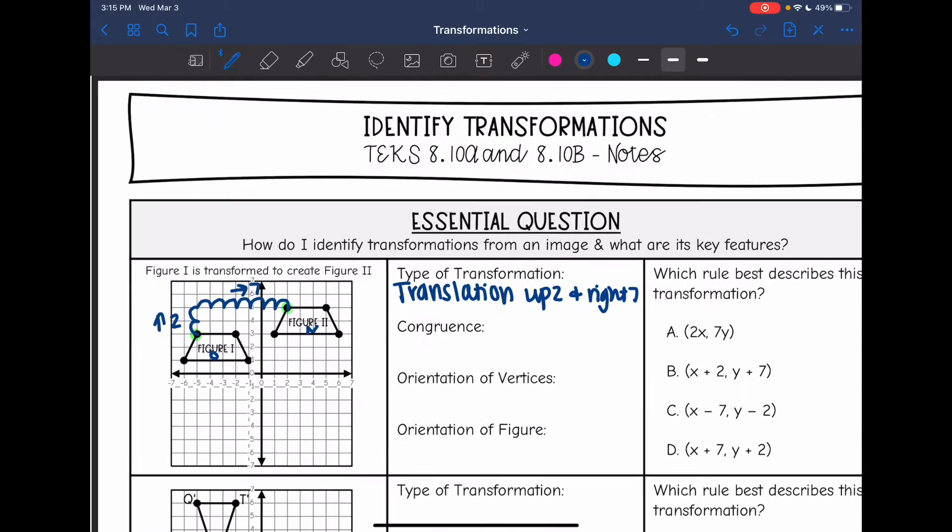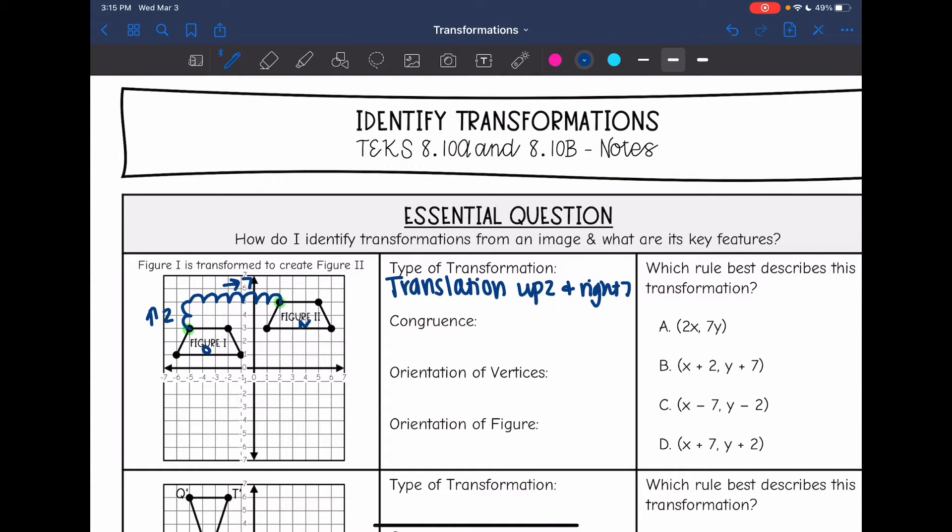So the congruence of this translation stayed the same. We did not change the size at all. The orientation of the vertices also stayed the same because I don't turn a translation at all. Same with the orientation of the figure.